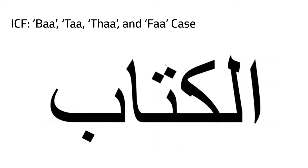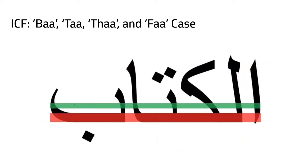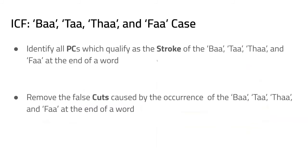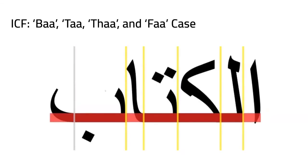The final case is the Ba and Fa case. Finding the baseline and LMT again shows the Ba split into two characters. The algorithm identifies all parts of the Ba or Fa stroke and removes these excessive cuts accordingly.